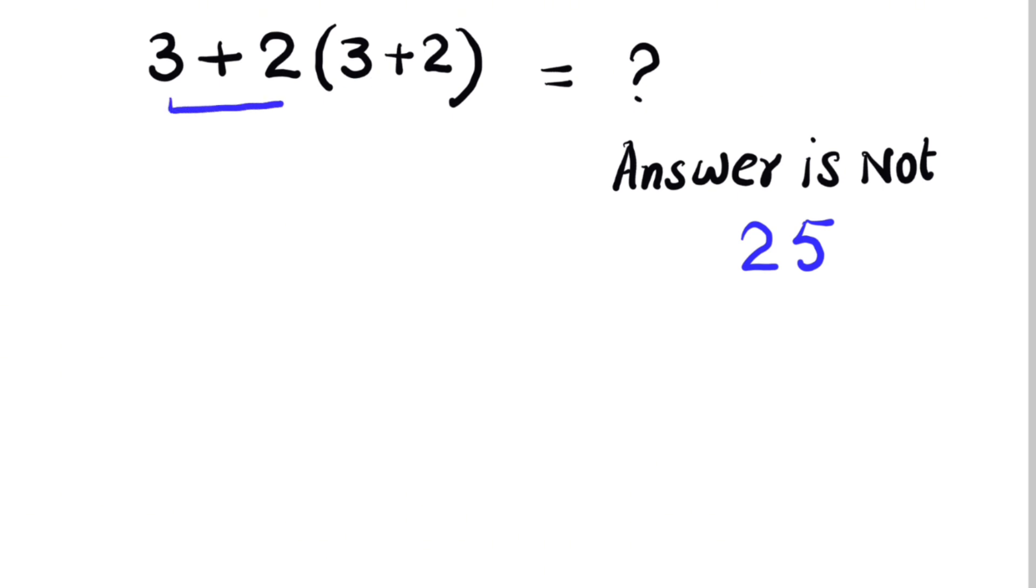So 3 plus 2 will be equal to 5 times 3 plus 2 is equal to 5. So 5 times 5 will be equal to 25. But the condition is, the answer is not 25. It means this question is wrong.